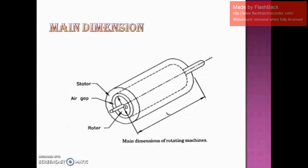As shown in the figure, we can see that there is a stator, there is a rotor, and in between we have an air gap. The armature diameter or stator bore diameter — capital D — and the armature or stator core length L are known as the main dimensions of the rotating machine. We normally start our designing with main dimensions, that is D and L.